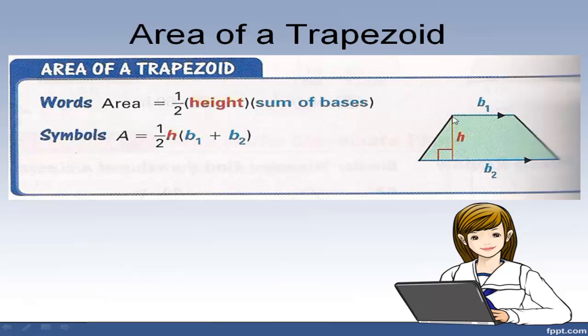So we have two bases: base 1 and base 2. To find the area of a trapezoid we need to know the bases and a height.